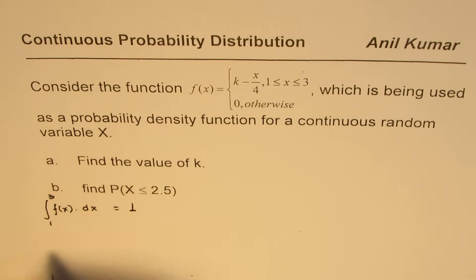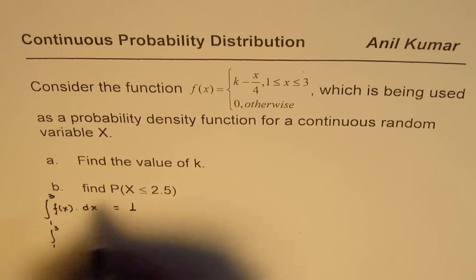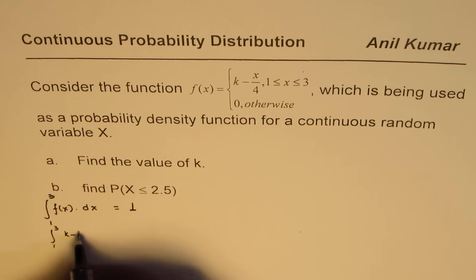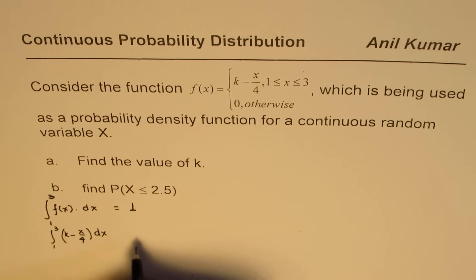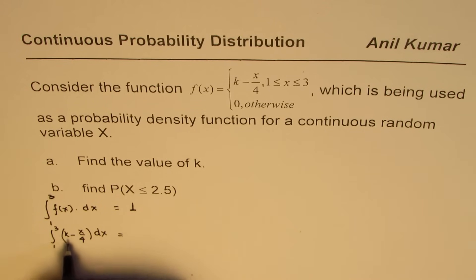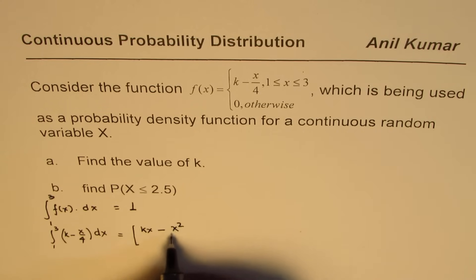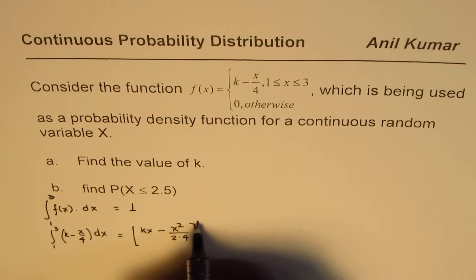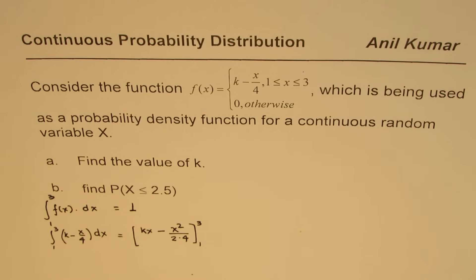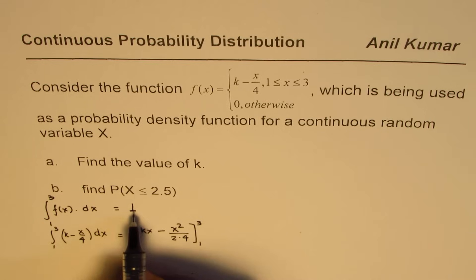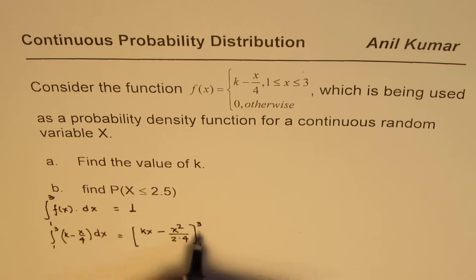We'll do the integration from 1 to 3 of the function k minus x over 4 dx, and this equals kx minus x squared over 8, evaluated from 1 to 3. This should be equal to 1, so we are solving this equation where this integral equals 1.